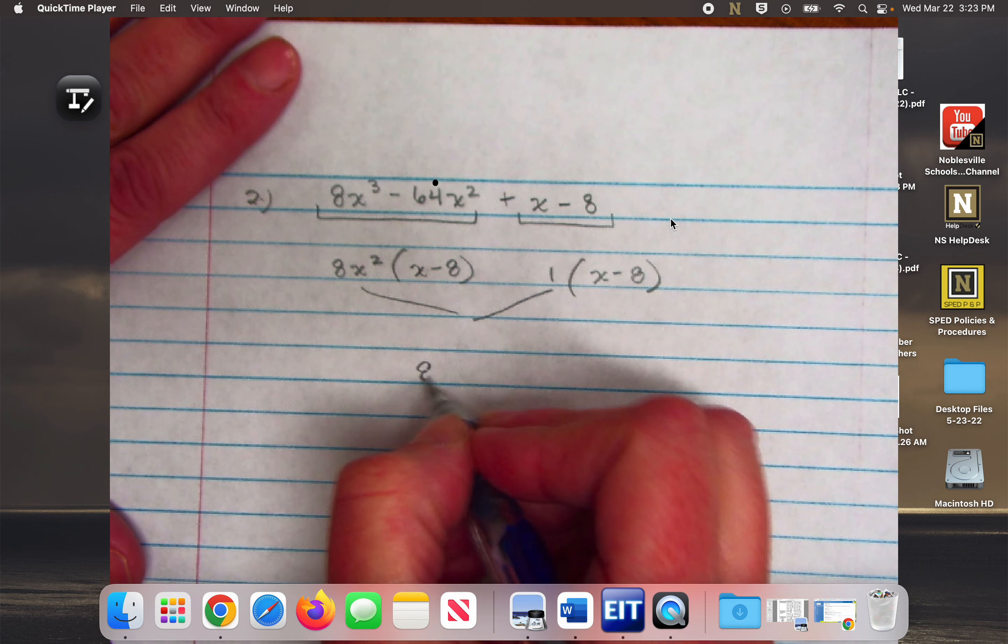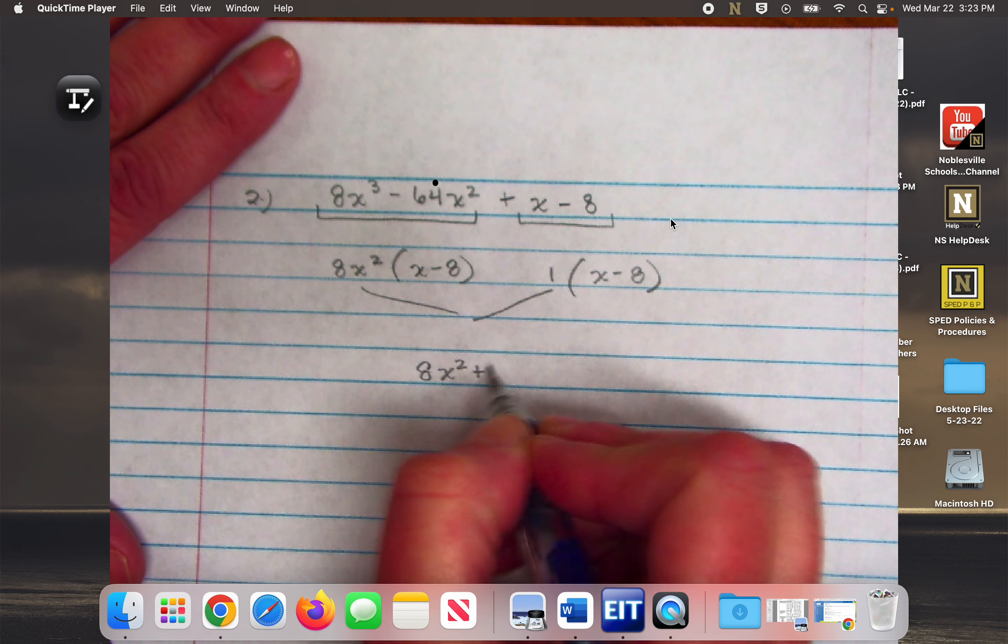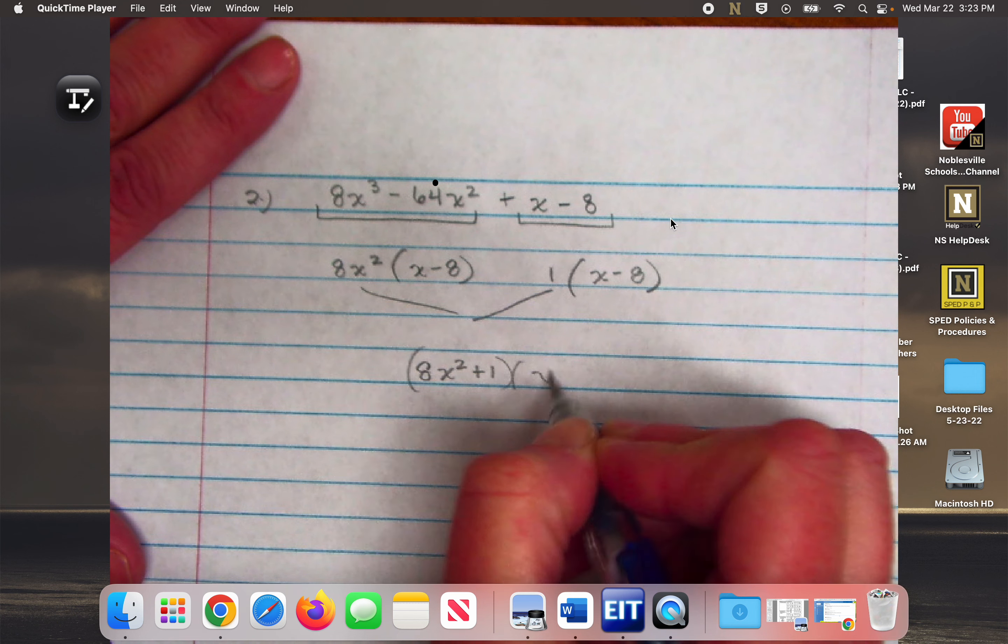So my answer is going to be 8x squared plus 1 times x minus 8.